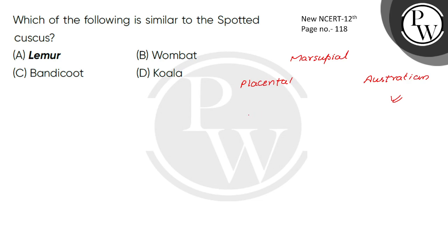So the spotted cuscus is similar to the lemur. The other options are wombat, koala, and bandicoot. The answer is the lemur, same as the spotted cuscus.